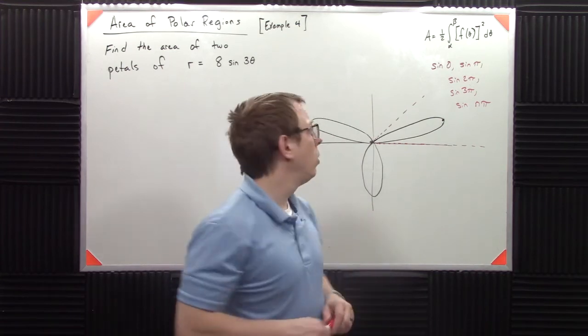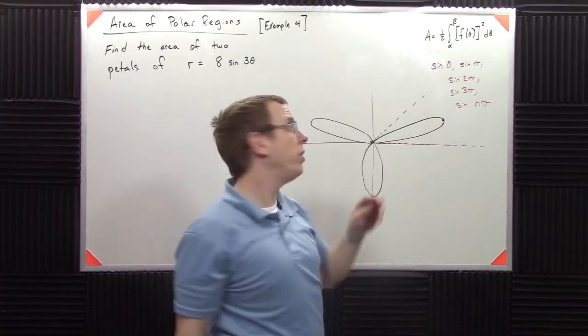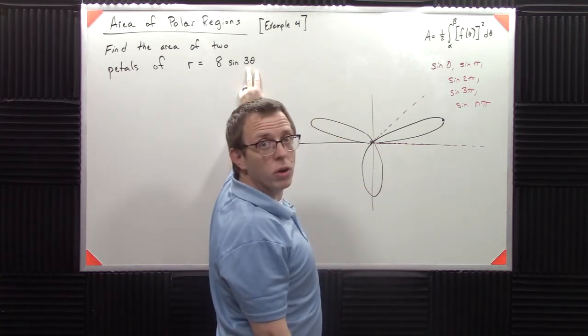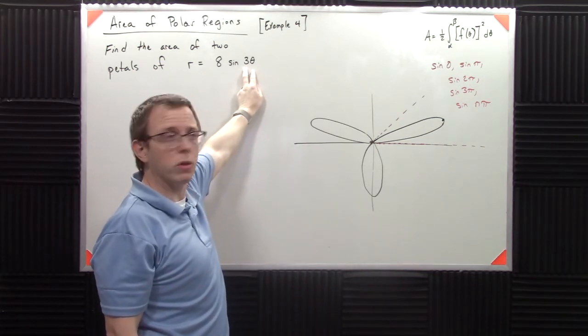Well, what I want to do is I want to say, all right, what's the next time three theta is going to get to zero? When theta is zero, it's already there. I'm sorry, it's going to get some number of pi. When theta is zero, we've already, we're good. We start there.